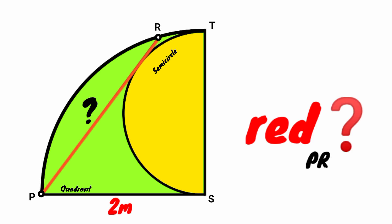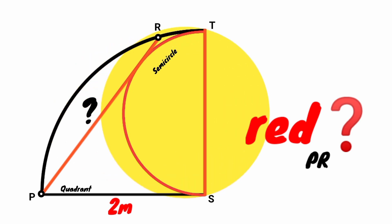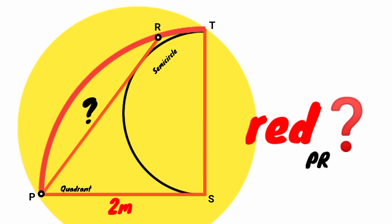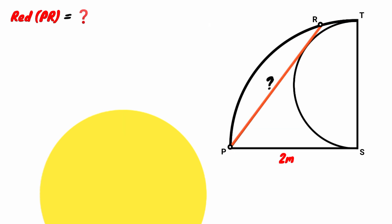Hi friends, welcome back to another interesting question. We are to determine the length of the red line, which is side PR. We observe this is a semicircle and this is a quadrant, and we have the length of this line segment to be two meters. So how can we calculate the length of this line PR?